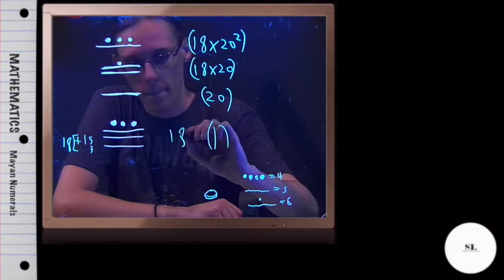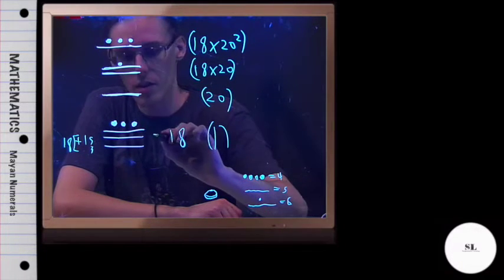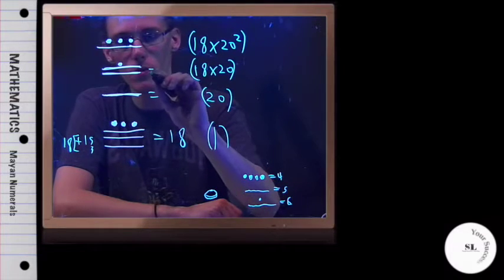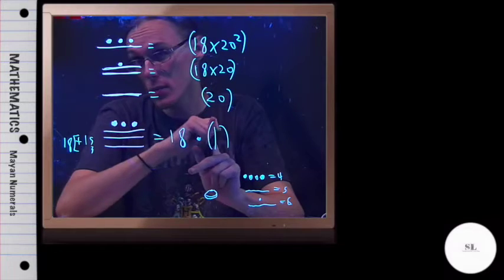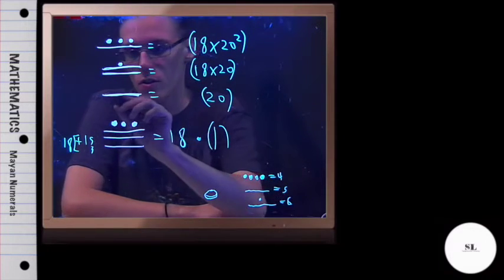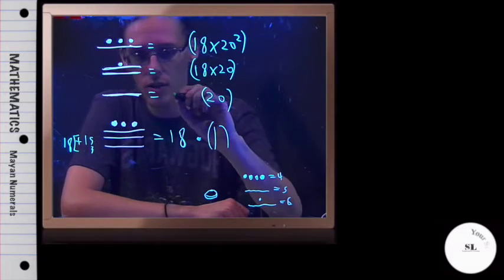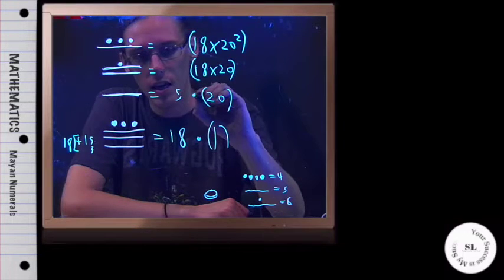I'm going to say 18. I'll use the equal sign as well on each of these symbols, times the position it's in. It's in the ones place. And now this is going to be five, just a single slash, times 20.